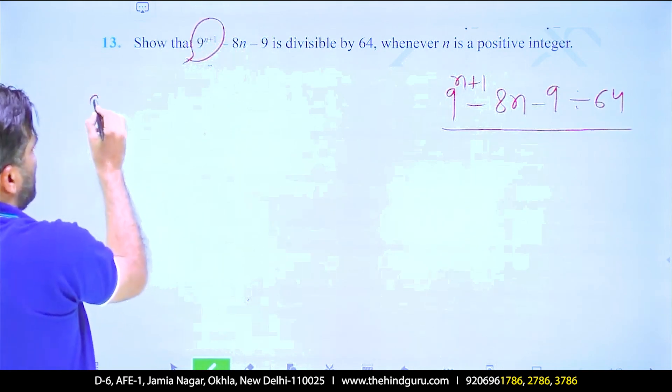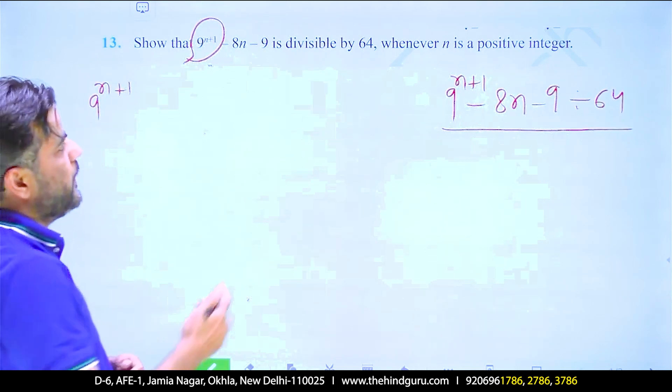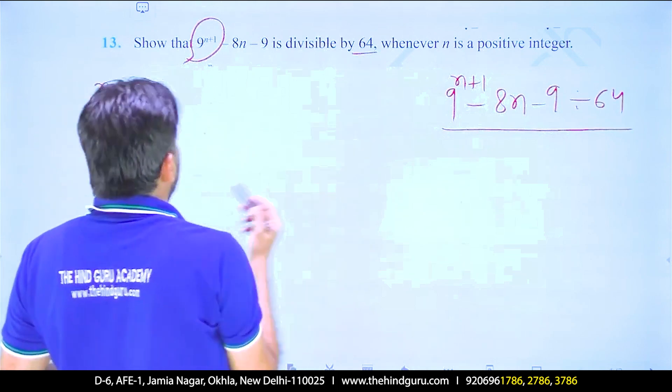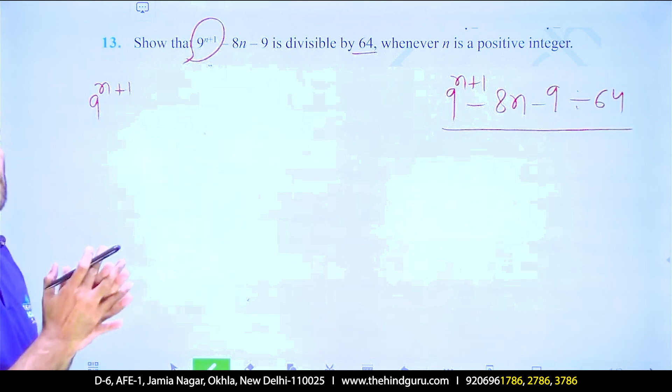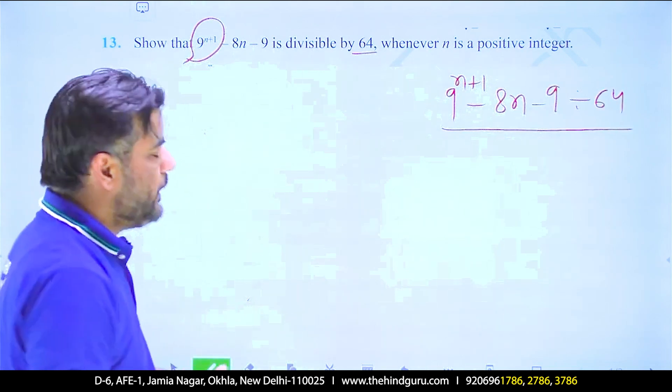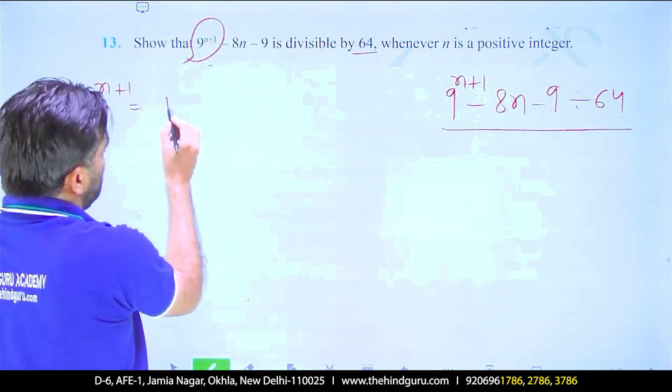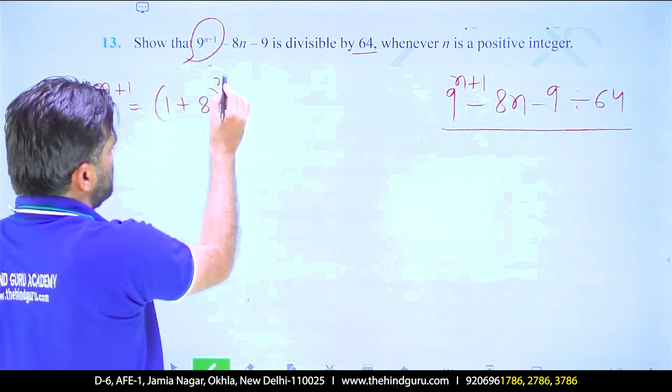So I have 9 to the power n plus 1. Now tell me, I have to divide by 64. So I will distribute 9 this way, so that it is 64 to the power n plus 1 minus 8 to the power n plus 1.